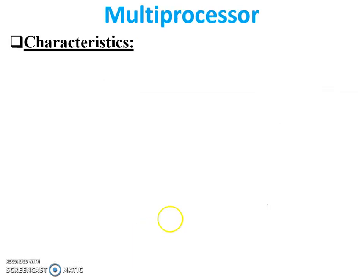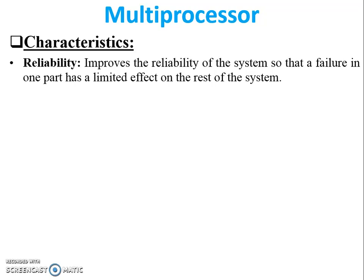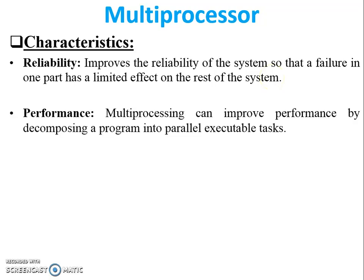Now, the characteristics of a multiprocessor: First is reliability — it improves the reliability of the system so that a failure in one part has a limited effect on the rest of the system, as discussed in the earlier example. Second is performance — multiprocessing can improve performance by decomposing a program into parallel executable tasks.